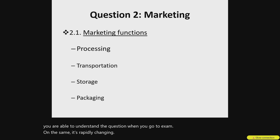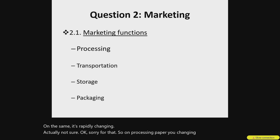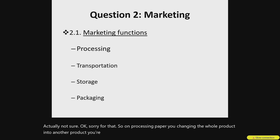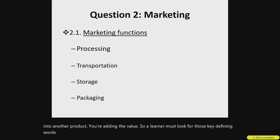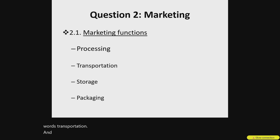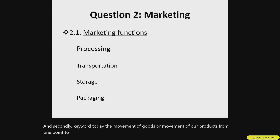On processing, it's where you are changing the raw product into another product — you are adding value. A learner must look for those key defining words. Transportation is where you will see a vehicle, even if they're giving you it in the form of a diagram — you always see a vehicle. The key word is the movement of goods or movement of products from one point to another. So that explains the marketing function of transportation.